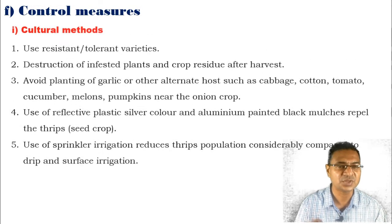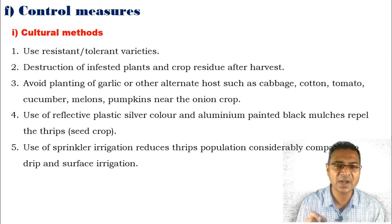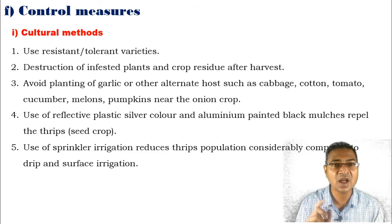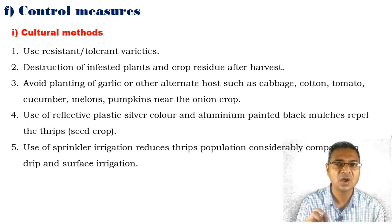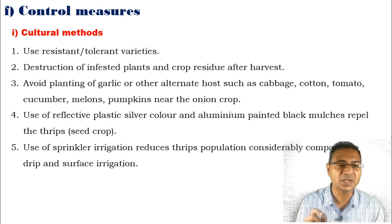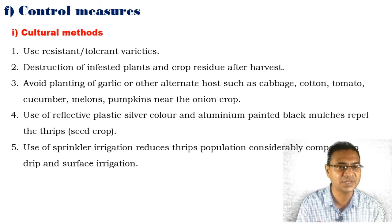The control measures: first, cultural methods. We can use resistant and tolerant varieties against the pest. Destruction of infested plants and crop residues after harvest. Avoid planting garlic or other alternative hosts such as cabbage, cotton, tomato, cucumber, melons, and pumpkins near the onion crop. Use of reflective plastic silver color and aluminum-painted black mulches repels thrips. Use of sprinkler irrigation reduces the thrips population considerably compared to drip and surface irrigation.